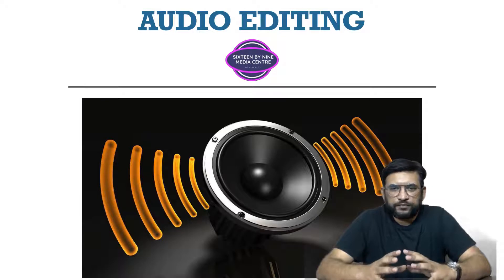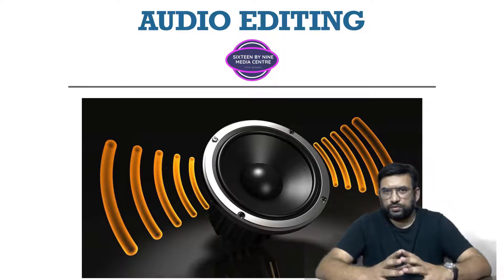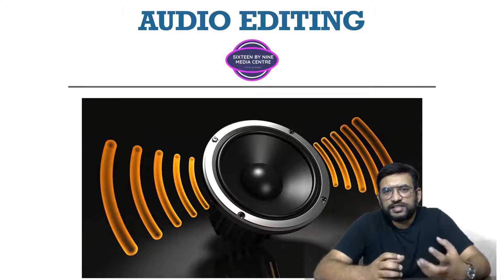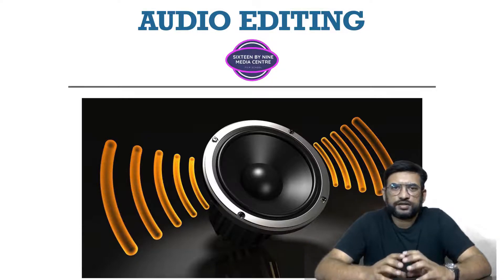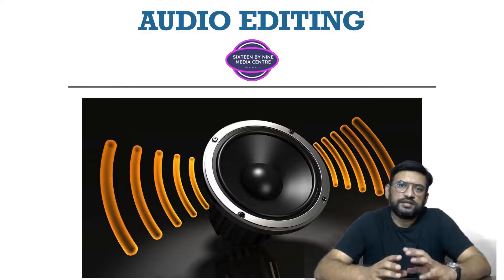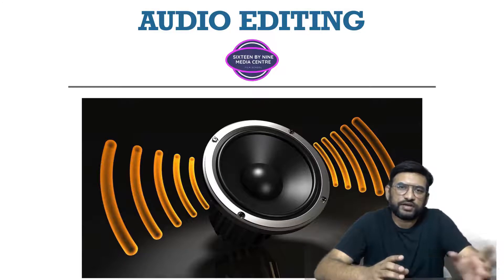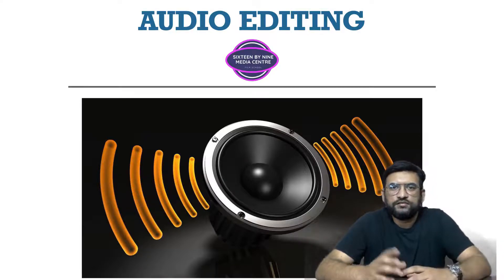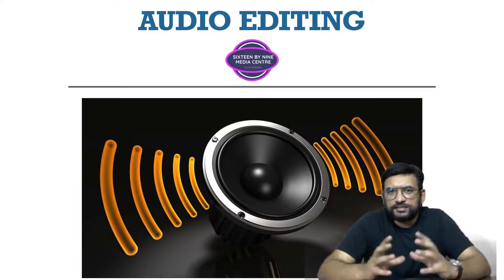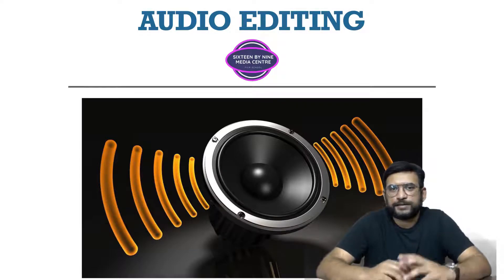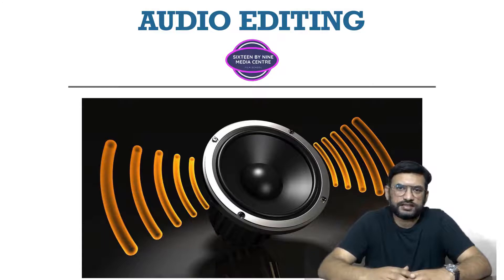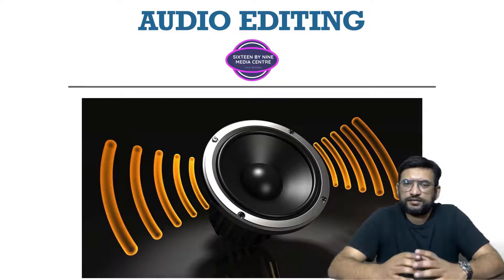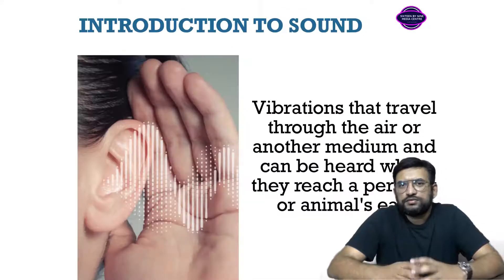First of all we are going to understand what sound is — the physical property called sound. We will explore the aesthetics of sound in film: diegetic sound, non-diegetic sound, parallel sound, contrapuntal sound, fidelity, high fidelity, low fidelity — all these terminologies pertaining to the aesthetic of editing. Then we will come to the technical part — filters, equalizers, and other things.